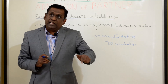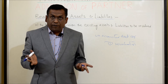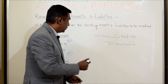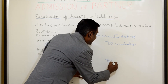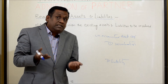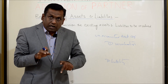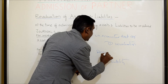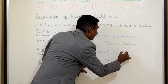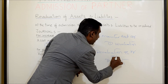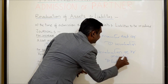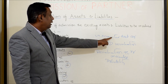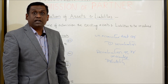Similarly, unaccounted liability has to be accounted. The liability has not been accounted so far and now it has to be. Liability is a credit balance, so you credit the liability. Because this liability was not accounted previously and now you are accounting it, that will increase the expenditure as well, so the revaluation account has to be debited. These are the two entries to record when there are unaccounted assets and liabilities.